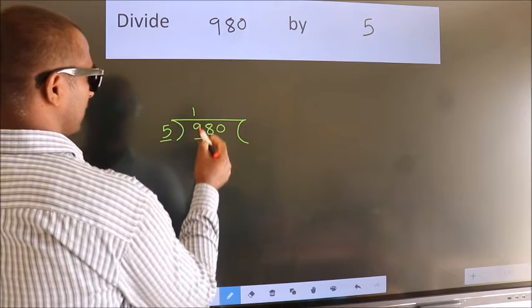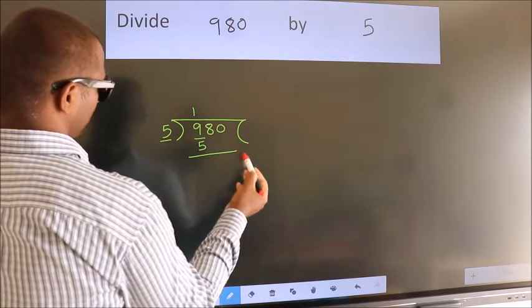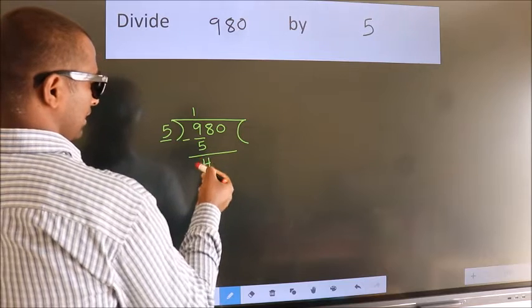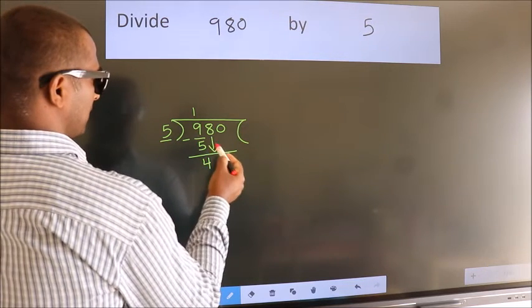Now we should subtract, we get 4. After this, bring down the beside number, so 8 down. So 48. A number close to 48 in the 5 table is 5 nines 45.